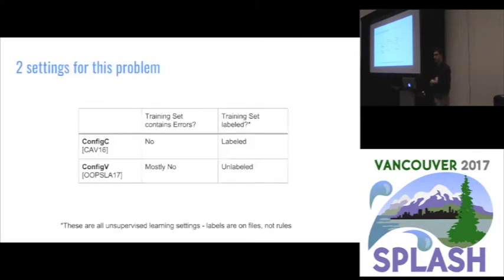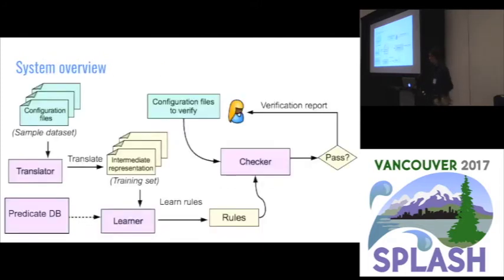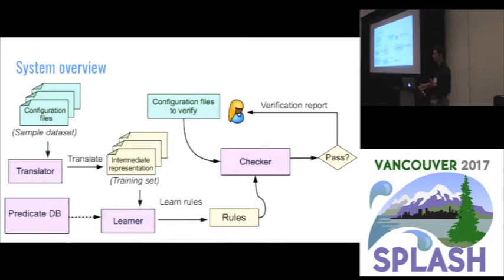There are two settings I'm going to talk about. First was configc, which is our work from CAV. In that case, we had a training set that was guaranteed to be 100% correct — we had a postdoc manually verify configuration files, but that doesn't scale. What we're looking at here is how do we verify configuration files if our training set is taken from the real world, so we don't have any guarantee on the quality — it may have some errors, it's a noisy training set. As a system overview, we're going to start by translating our training set into some intermediate representation, because we want our tool to work over any language — it should be language agnostic. With that, we're going to learn our set of rules, and those rules will be sent to the checker, which will create a verification report for the user on their own file.